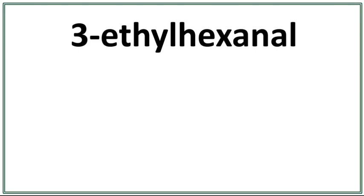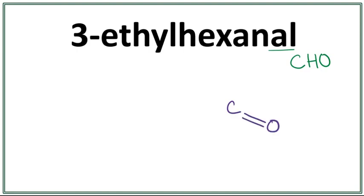Let's draw the structure for 3-ethyl hexanol. The 'al' here means that this is an aldehyde. An aldehyde has a functional group of C, H, O — carbon having a double bond with oxygen and a single bond with hydrogen.